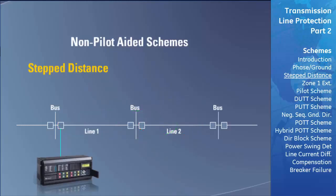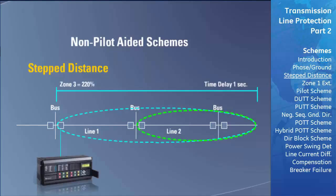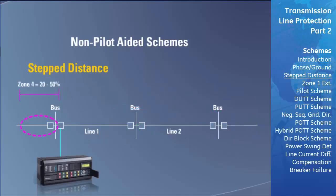The third zone of protection is set to overreach past the end of the second adjacent transmission line, acting as backup for that line in case its protection fails. Zone 3 is usually set to 220 percent of the impedance of its own line if line 1 and line 2 impedances are equal, extending to the same point as zone 2 of the adjacent line. Zone 3 must have a time delay longer than the operate time of zone 2 of the adjacent line—a time delay of one second is commonly used. Zone 4 provides backup protection for a small portion of the adjacent line in the reverse direction, with a typical time delay of 750 milliseconds to one second.